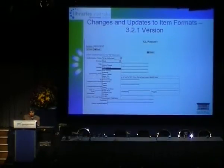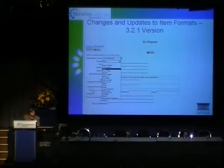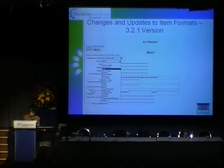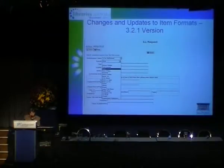Changes in the new version include book replacing monograph, and serial being replaced by print journal, e-journal, and article online. The most commonly used item formats will appear. Instead of entering other, you are now able to select, for example, CD-ROM or computer file. And if your requested item format isn't available, the value of other will appear.